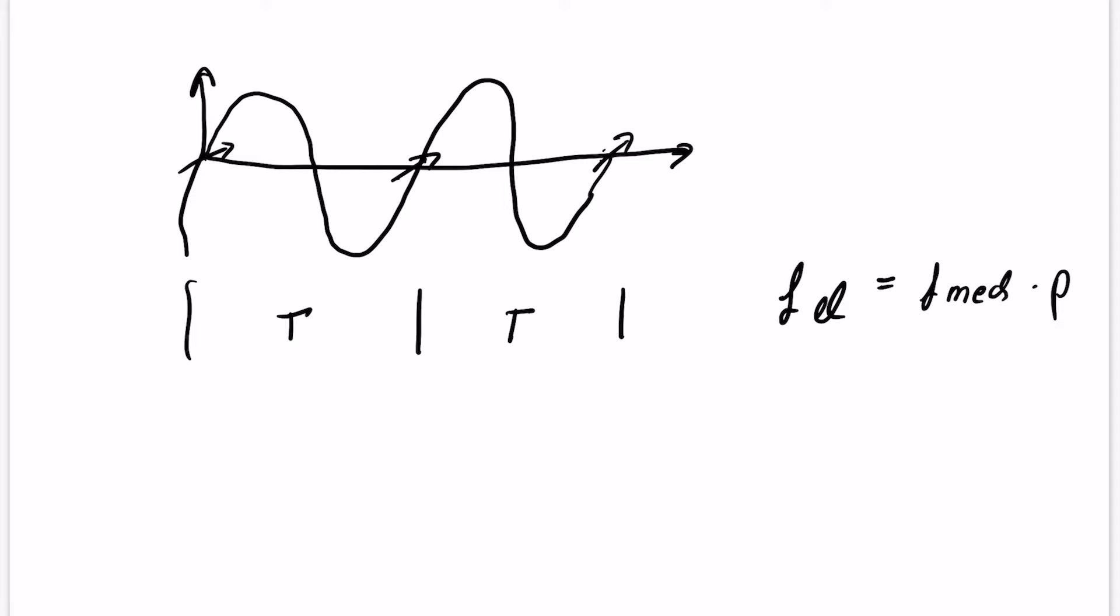So, if our signal has an offset this is not a problem we can define another level this must not be a zero crossing what we are looking for it can be also a different level depending on the offset.